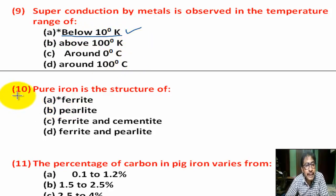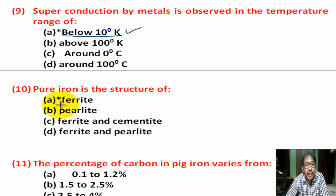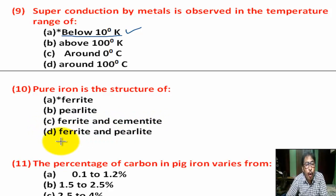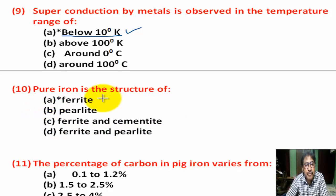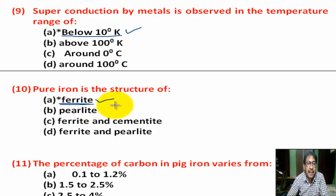Question number 10: Pure iron has the structure of — Option A: ferrite. Option B: pearlite. Option C: ferrite and cementite. Option D: ferrite and pearlite. Correct answer is Option A — ferrite.